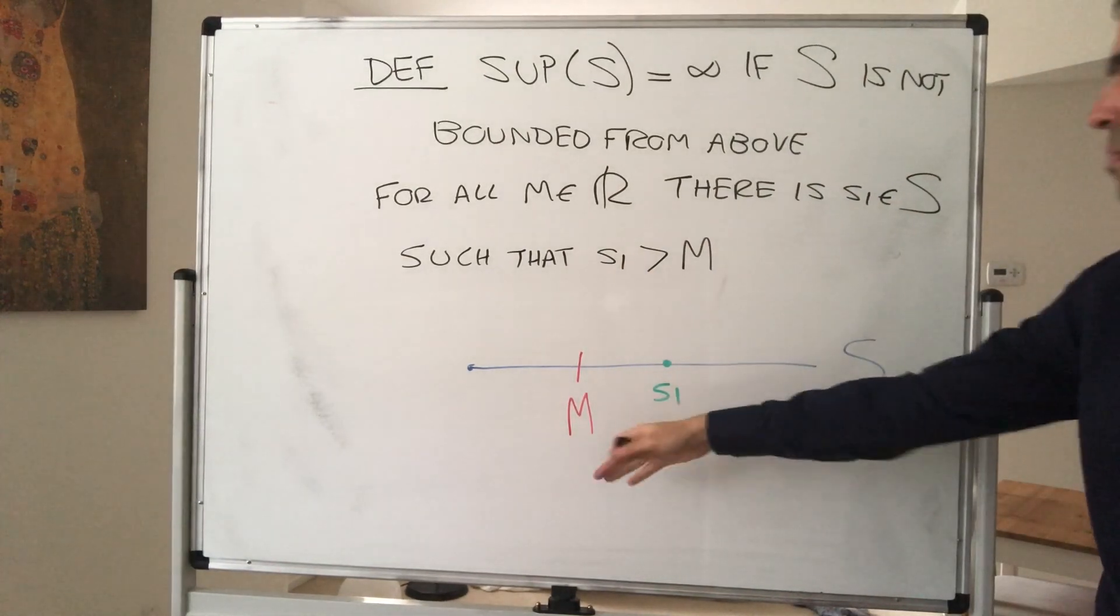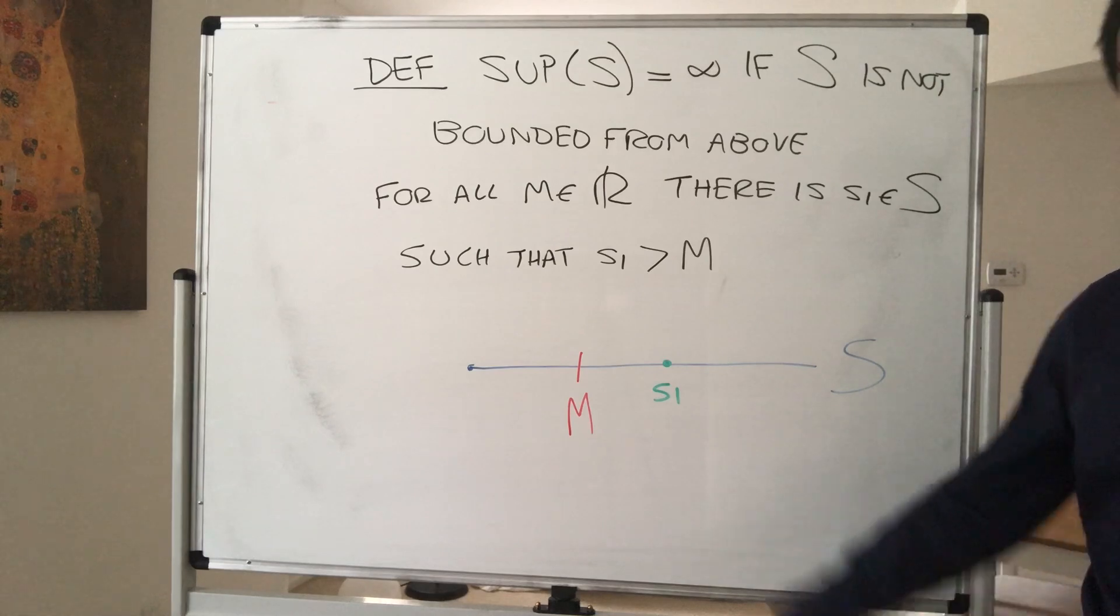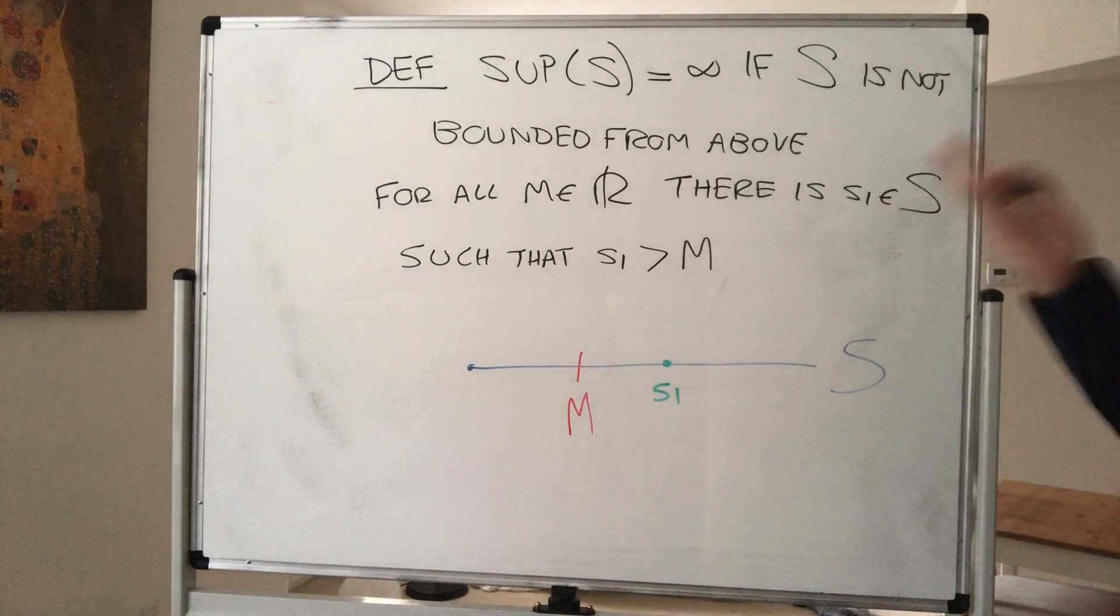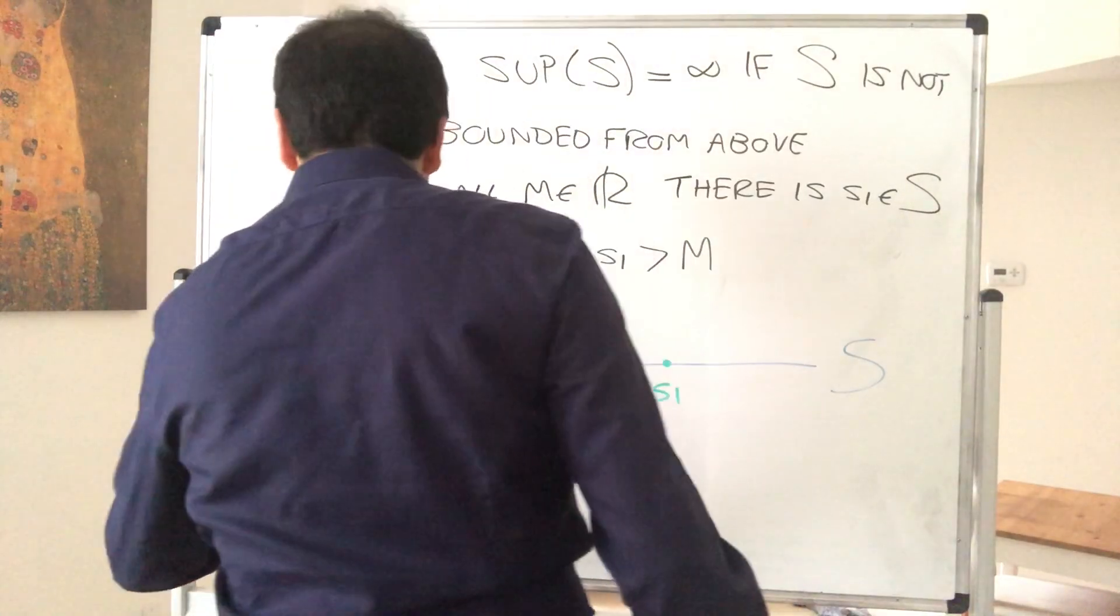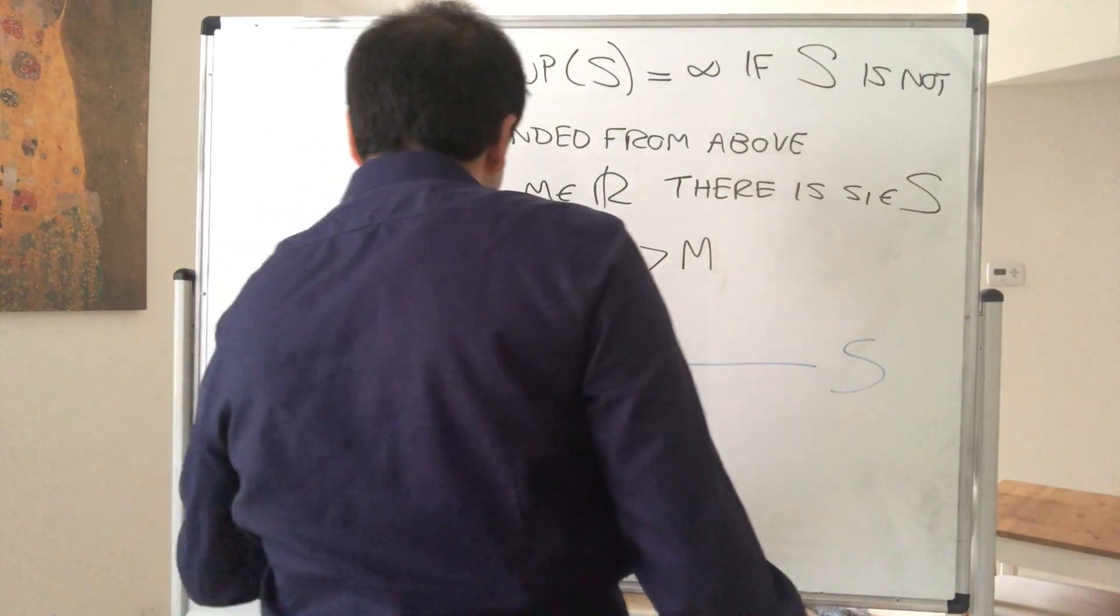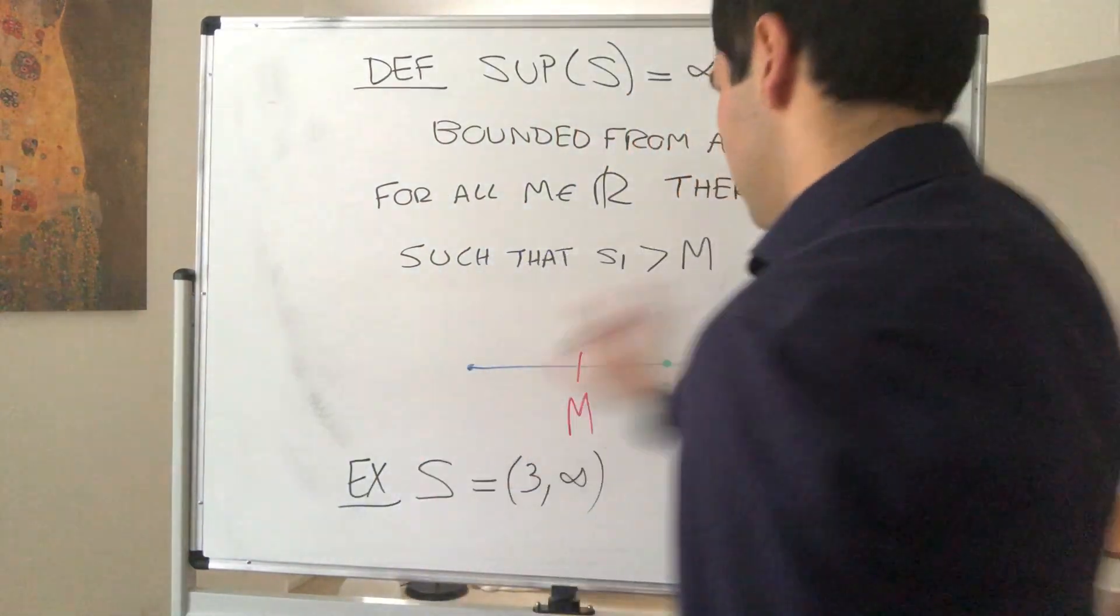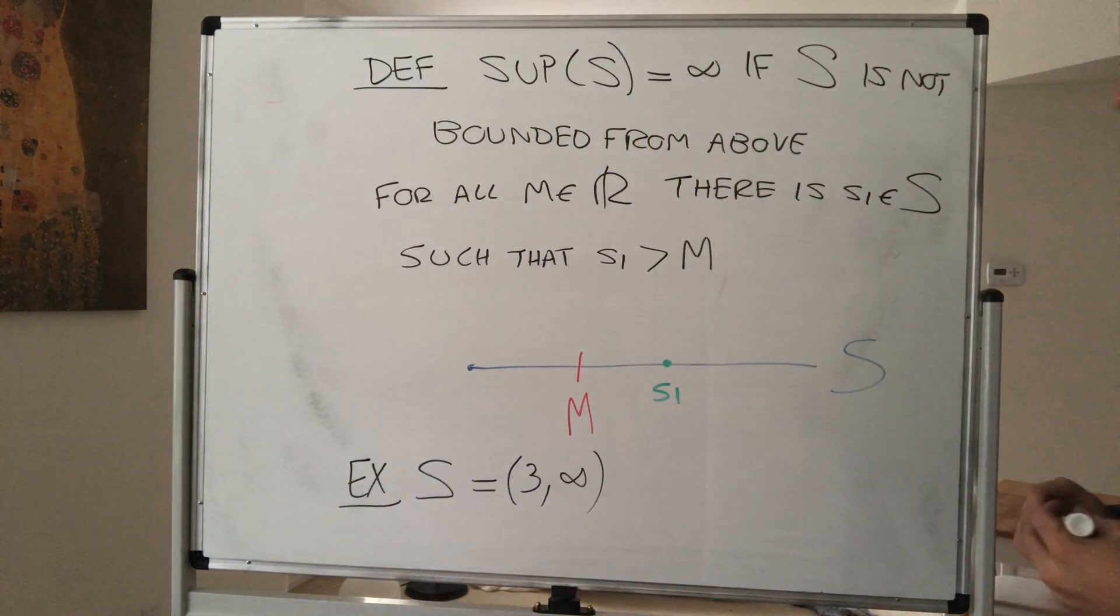So in other words, is there an element bigger than a million? Yes. Is there one bigger than a billion? Yes, as well. So for instance, an example of a set that's not bounded from above is simply the interval 3 comma infinity. So it's like infinite from one side.